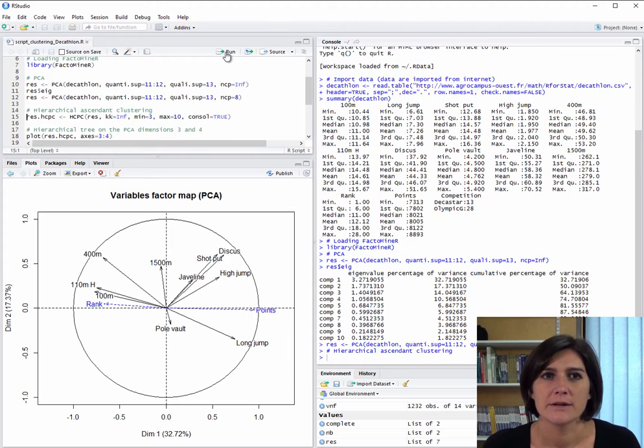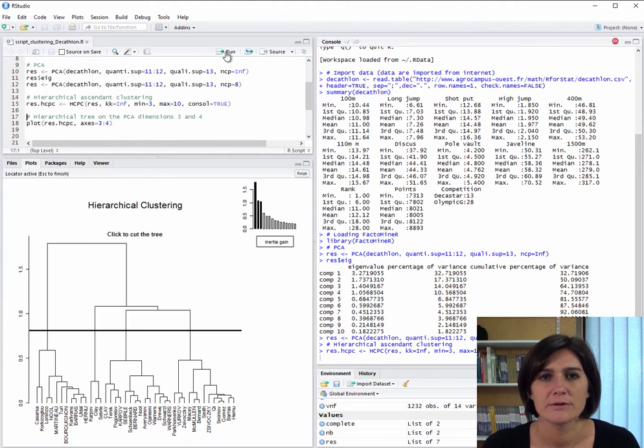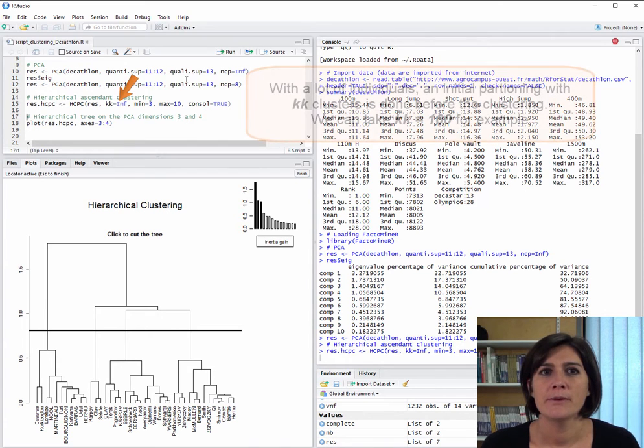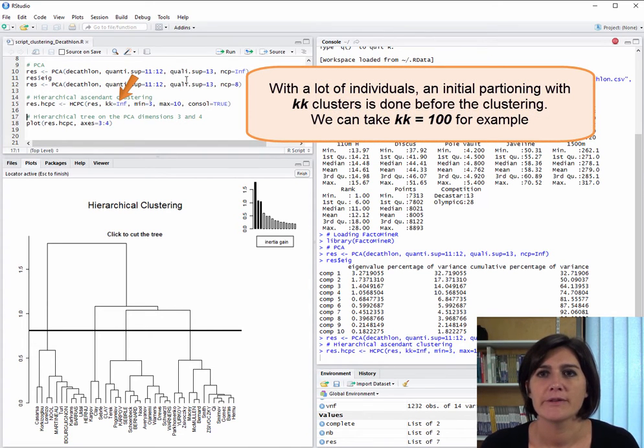Now we can do the clustering. We take the object output by the PCA and do clustering on it with the HCPC function. Here, kk equal inf means that we don't want to do any initial partitioning before running the clustering. If we did put a number there, like 100 for example, first the function would divide the data up into 100 classes, then do the clustering. As our dataset isn't so big, there are only 41 individuals, we can simply do the clustering directly.